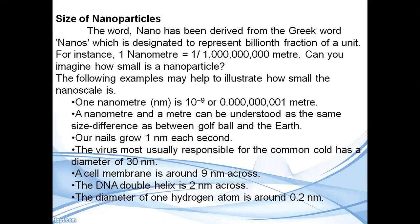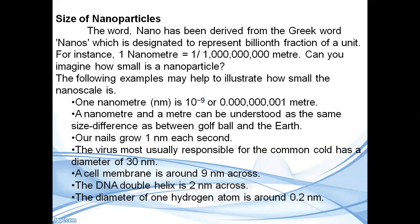The word 'nano' has been derived from the Greek word 'nanos,' which is used to represent a very small fraction of a unit. For instance, 1 nanometer is equal to 10 to the power of minus 9, or 0.000000001 meters.